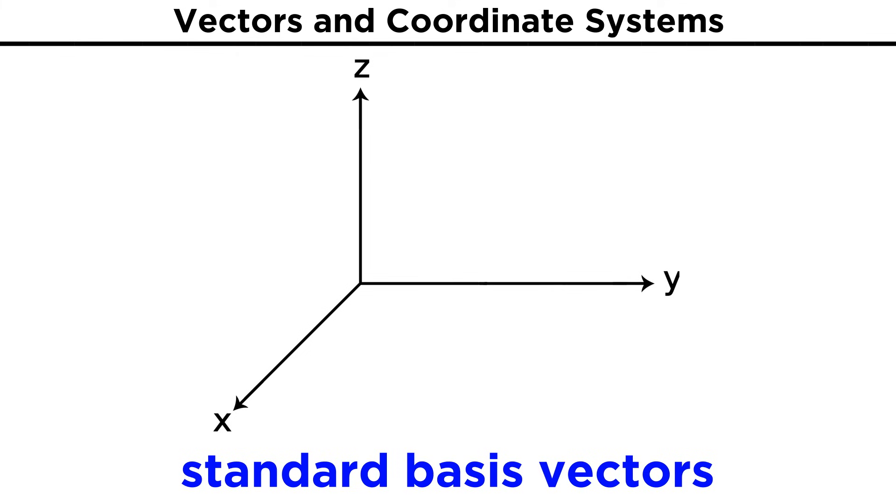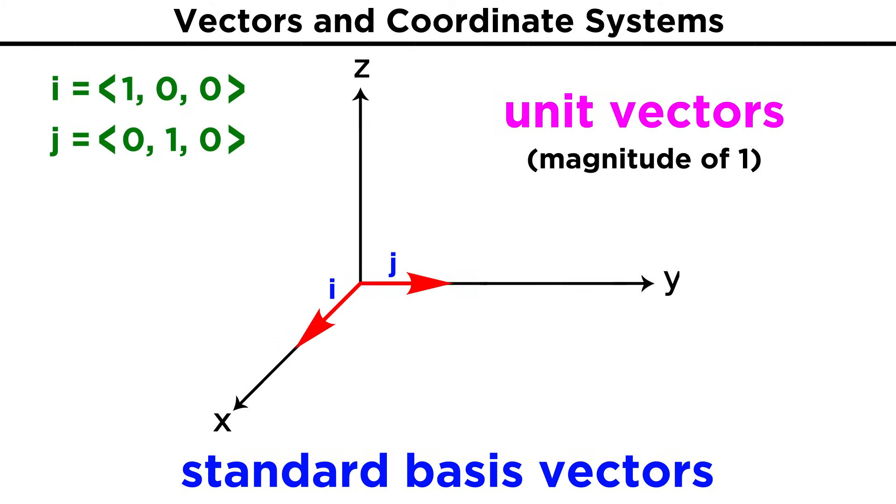There is one other way we can represent vectors that will be important to know, and it involves standard basis vectors, which are unit vectors, meaning they have a length of one. If we are in a three-dimensional coordinate system, any vector can be represented by three components. The vector with the components one, zero, zero extending one unit along the X axis is denoted by a lowercase i. The vector with components zero, one, zero extending one unit along the Y axis is denoted by a lowercase j, and zero, zero, one, extending one unit along the Z axis is denoted by a lowercase k. We can now represent any vector with multiples of i, j, and k. So five, negative two, nine can also be five i minus two j plus nine k. This also works in two dimensions, we just lose the k.